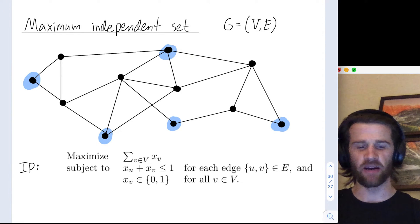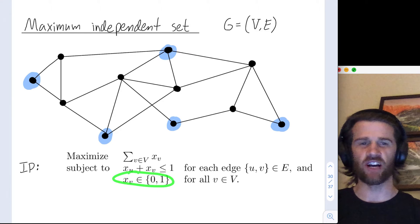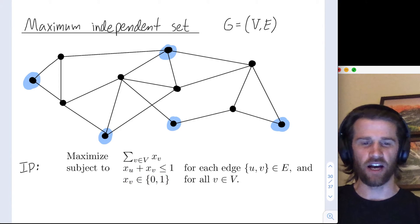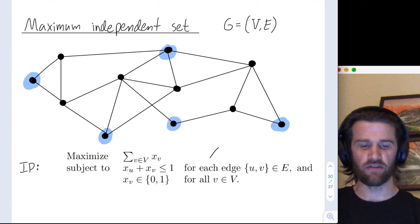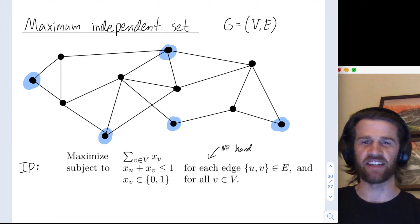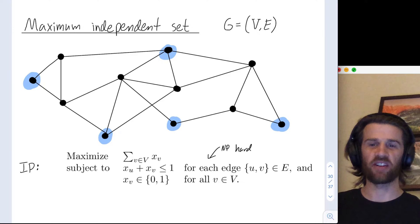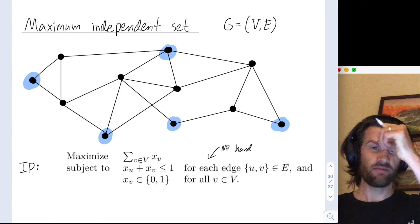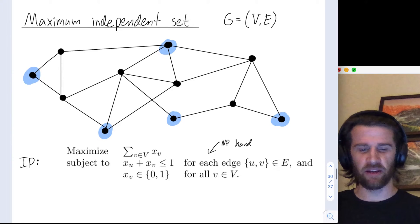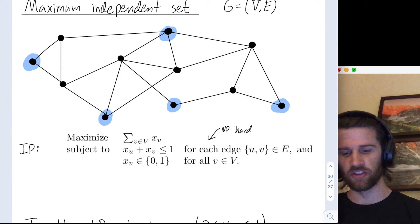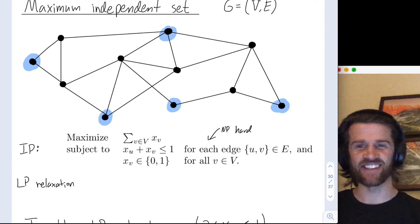It's a linear program but we have this integrality restriction. Solving this is NP-hard — a very hard problem to solve. And as I'll explain at the end, it's actually a very hard problem to approximate as well. You might try to approximate this by linear programming relaxation, but you'll fail.